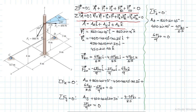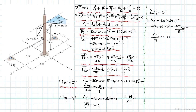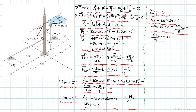We now collect all force vectors: vector A, force vector F1, force vector F2, force vector FBC, and force vector FED. Grouping components by direction and applying equilibrium gives: summation of forces in x, summation of forces in y, and summation of forces in z — that gives us three equations.